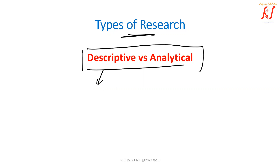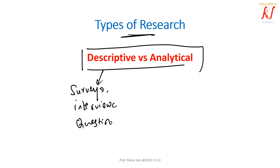If we talk about descriptive research, it is completely based on methods like surveys, interviews, questionnaires, etc. In descriptive type of research, the complete focus is on gathering different types of information via different methodologies — it may be surveys,